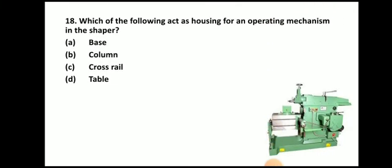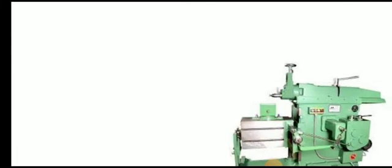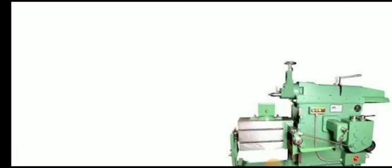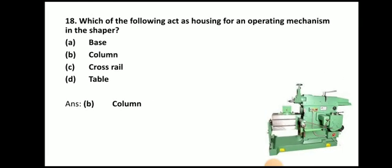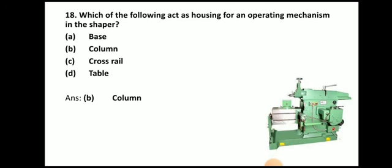Next question: which of the following acts as a housing for the operating mechanism in a shaper? The answer is the column. The column of a shaper machine contains all the mechanism and acts as a housing for the operating mechanism.